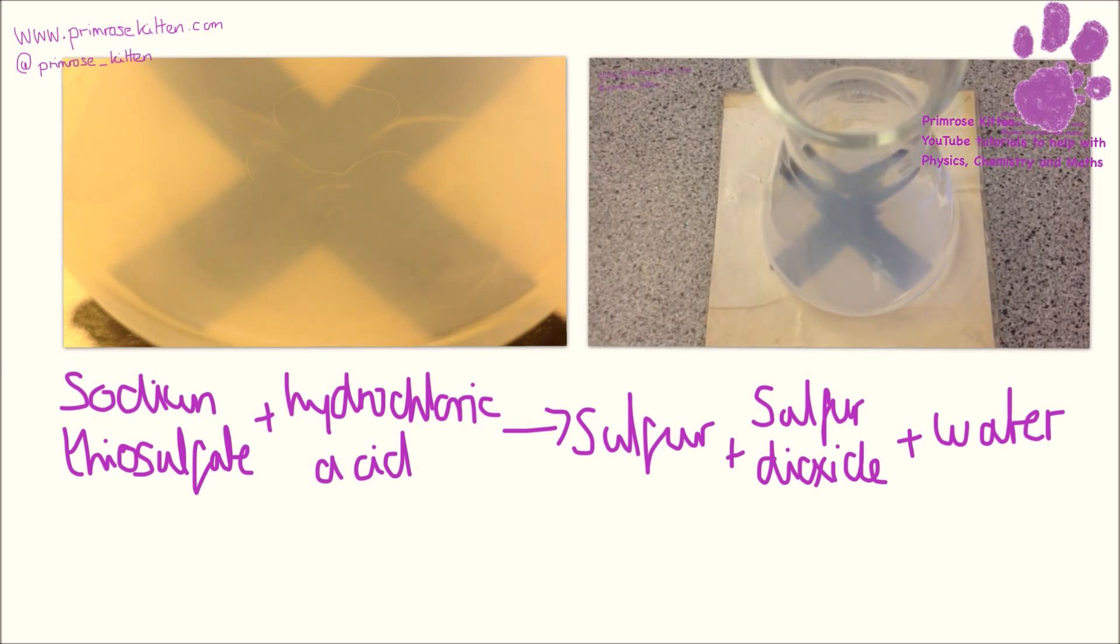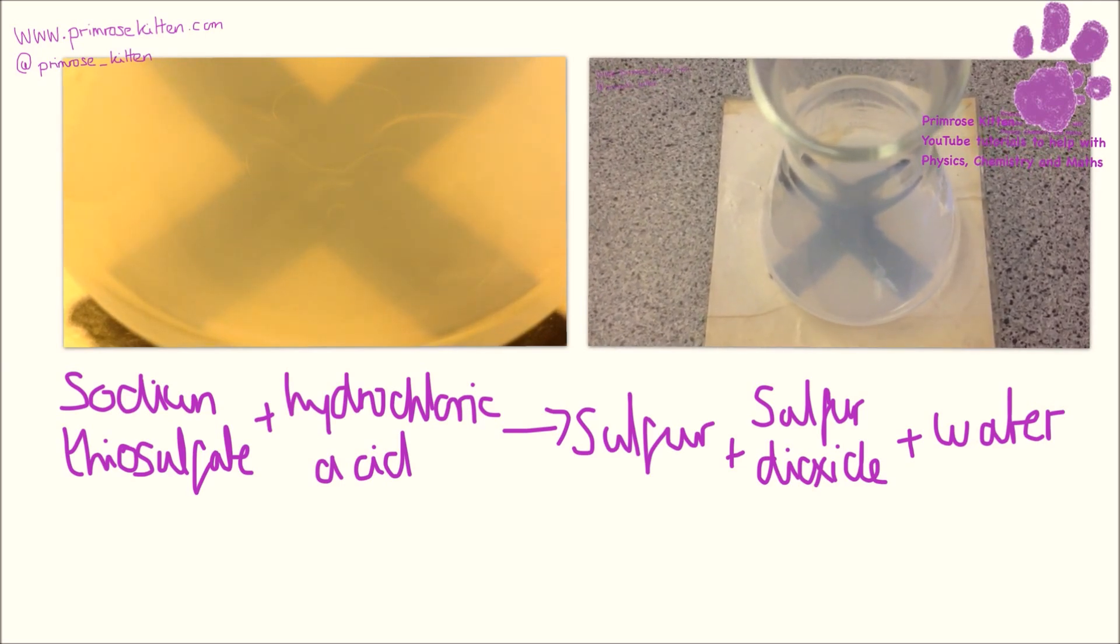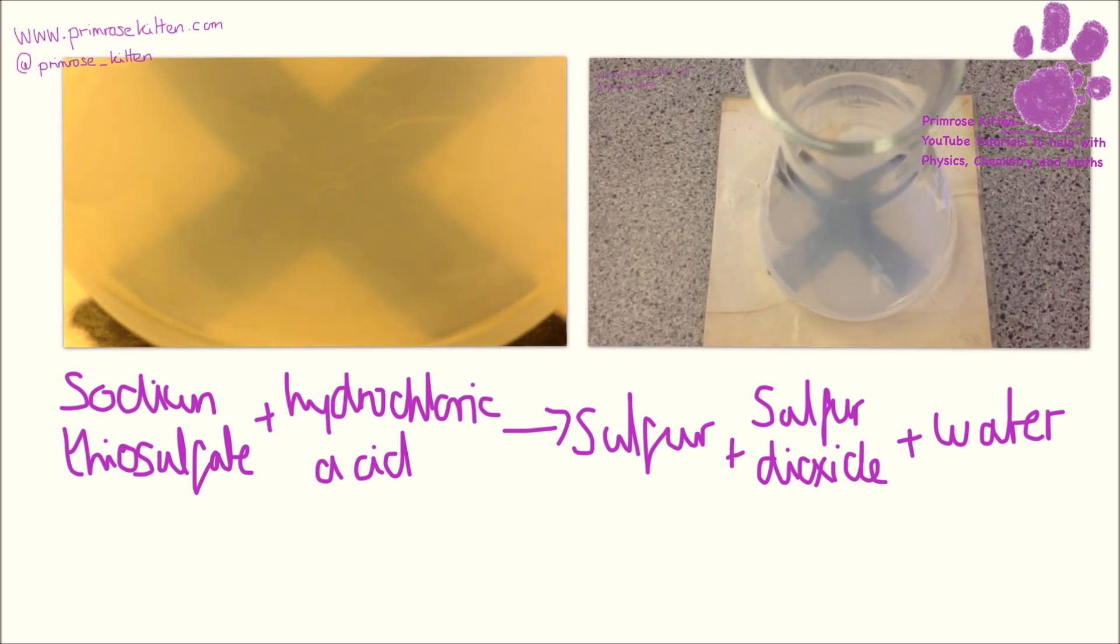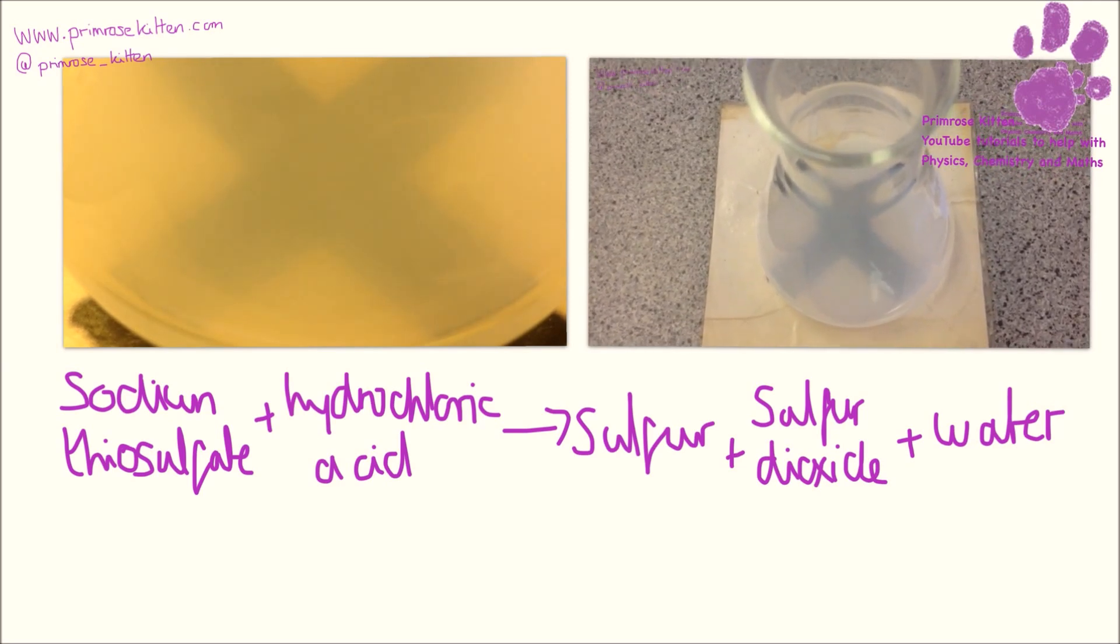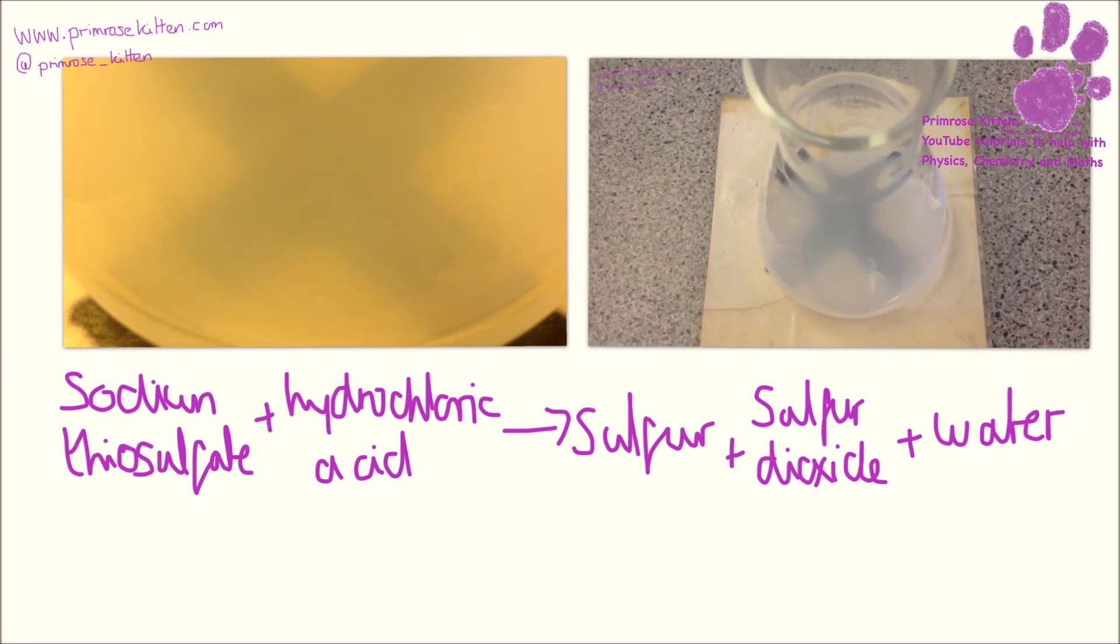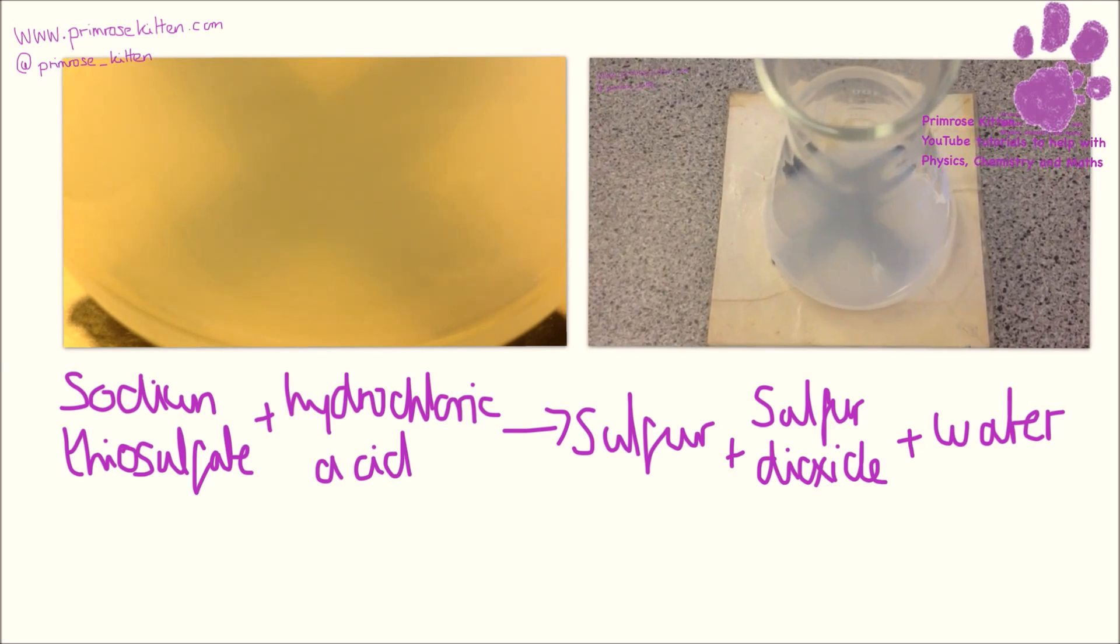This is another way of measuring the rate of reaction. So we know when the reaction is finished when we can't see the cross anymore. That's because loads of sulfur has been produced, which goes cloudy so you can't see the cross on the bottom.